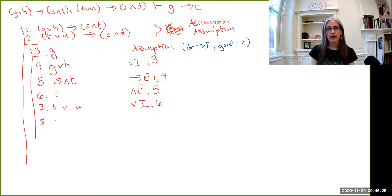T or U is the antecedent of the conditional in line two. So at line eight, we can write down the consequence, C and D. So that's conditional elimination, lines two and seven.